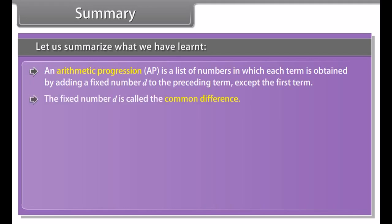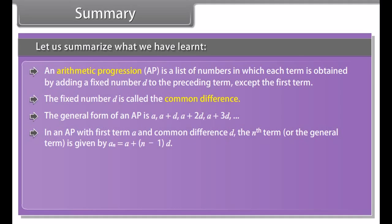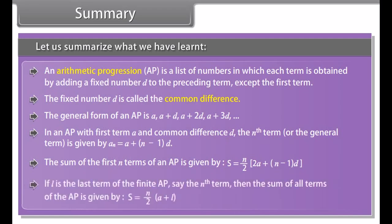Let us summarize what we have learned. An arithmetic progression (AP) is a list of numbers in which each term is obtained by adding a fixed number D to the preceding term, except the first term. The fixed number D is called the common difference. The general form of an AP is A, A+D, A+2D, A+3D, and so on. The nth term is AN = A + (N−1)D. The sum of the first N terms is S = N/2 × [2A + (N−1)D], or S = N/2 × (A + L) when the last term L is known.